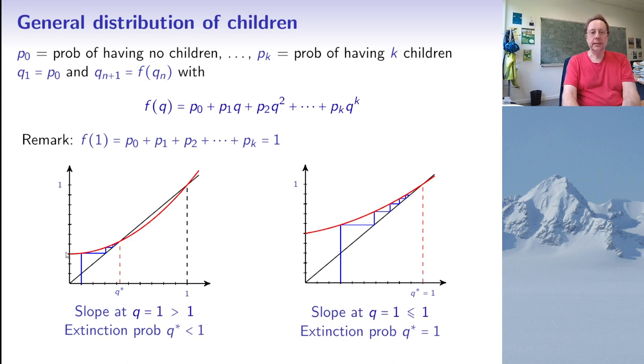So the first possibility is that this curve, so the red curve is again the graph of Q maps to F of Q. So you see, if P1 and P2 are positive, you actually have an increasing and convex function. So this F can, so it will start at P0 and then it may cross the diagonal a first time at the point Q star, and then it goes below the diagonal and then it crosses again at one. And actually it can cross only twice because F is convex if P2 is positive.